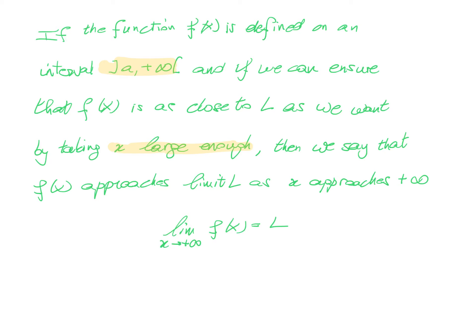And now we have the same thing: we write the limit of f of x is l. For the limit of f of x going to minus infinity, you will have a similar definition, except if you are going to minus infinity, all your values have to be larger than minus infinity. And in this case, we have x not large enough, but x negative and large enough. So this means we take extremely small values, values going to minus infinity. And then the limit for x going to minus infinity of f of x will be equal to l.